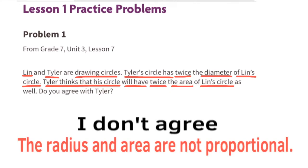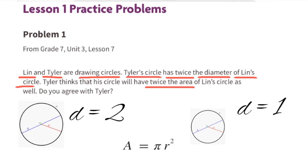I don't agree because the size of the radius is not proportional to the size of the area. Here's an example — these circles are not to scale, but let's use the larger circle on the left as Tyler's circle and the smaller circle on the right as Lynn's circle. The diameter of Tyler's circle is two units, that's twice the diameter of Lynn's circle.